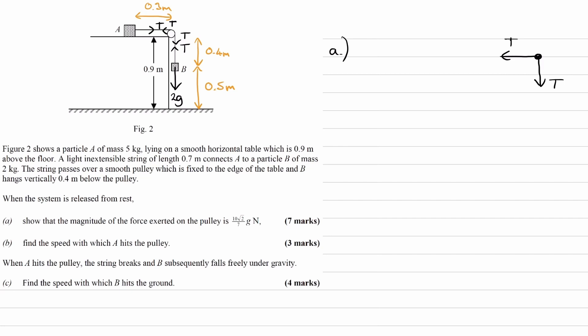B will accelerate downwards and A will accelerate horizontally. For B, the equation of motion is 2g - T = 2a. For A, the equation is simply T = 5a, as that's the only force acting on A. Substituting T into the first equation: 2g - 5a = 2a, so 7a = 2g, giving a = 2g/7. That's our acceleration. Now we can work out the tension by substituting back: T = 5a = 5(2g/7) = 10g/7.